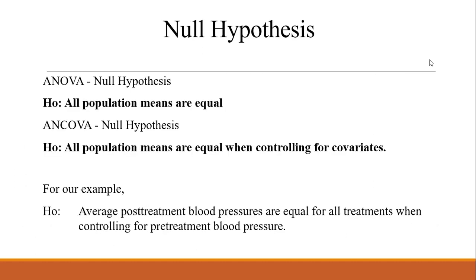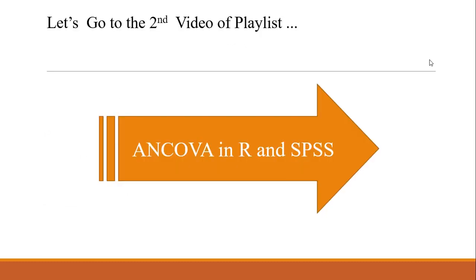Here are the null hypothesis statements for ANOVA and ANCOVA. For ANOVA, the null hypothesis states that all population means are equal. For ANCOVA, the null hypothesis states that all population means are equal when controlling for covariates. In our pharmaceutical example, the null hypothesis is written as: average post-treatment blood pressure is equal for all treatments when controlling for pre-treatment blood pressure.